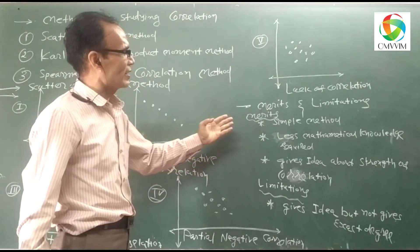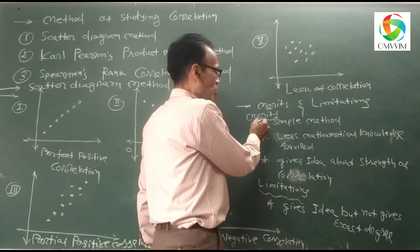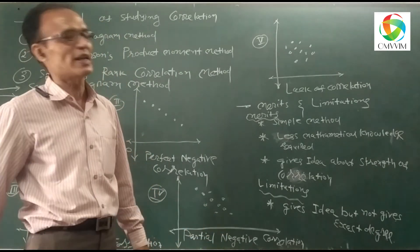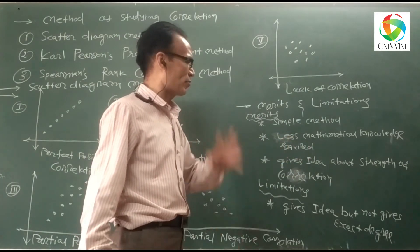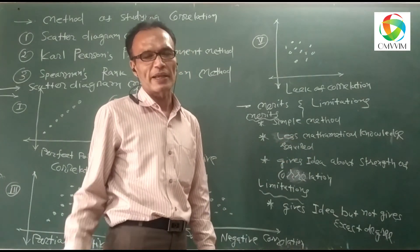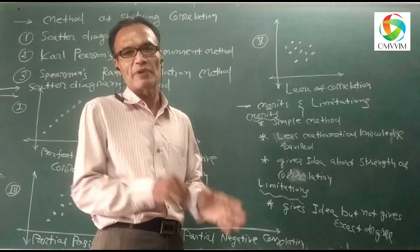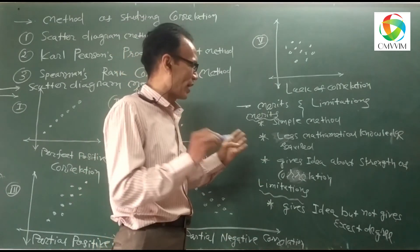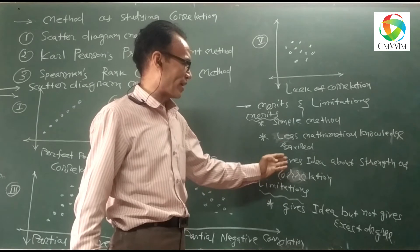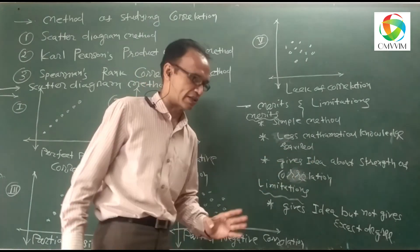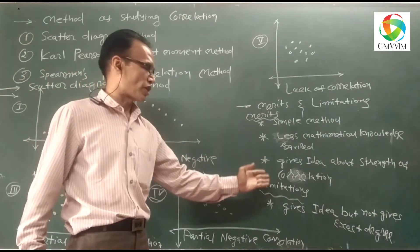Now we will study the merits and limitations of the scatter diagram. The merits are: first, it is the simplest method to study the correlation between two variables. Second, less mathematical knowledge is required in this method — points are simply plotted on graph paper and from the figure we can say whether it is positive, negative, partial positive, or partial negative. Third, it gives an idea about the strength of correlation — that is, whether it is perfect or partial.